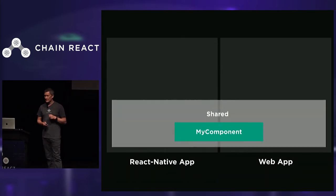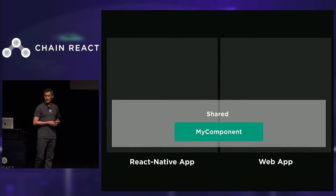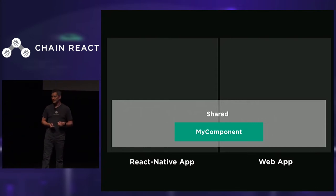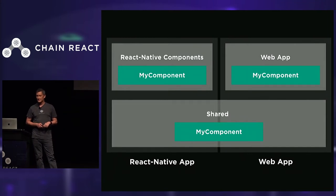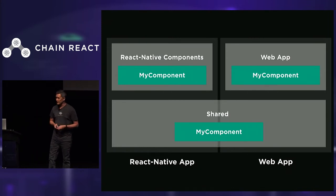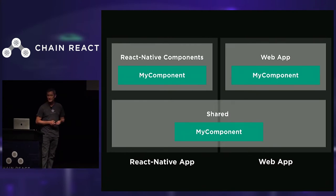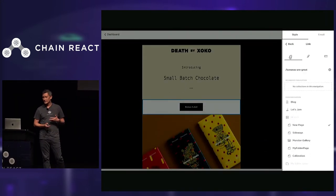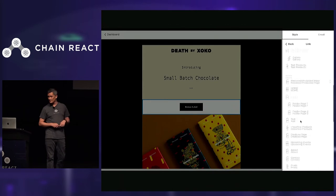We took another approach: extract out the shared business logic into its own layer — a shared layer component. This is where all shared logic that doesn't involve UI lives. On top of that, we build platform-specific components. This lets us build code in an uncompromising way using the tools we're already familiar with, and compose more complex cross-platform components. The business logic only needs to be written once.